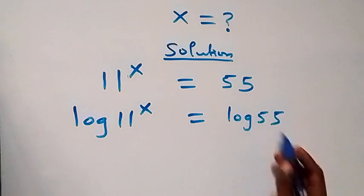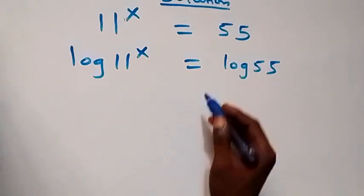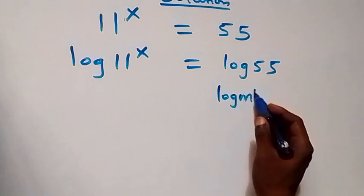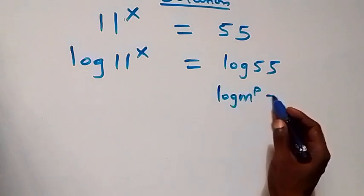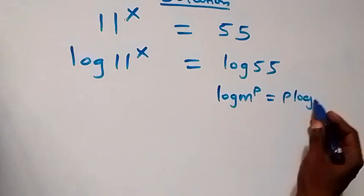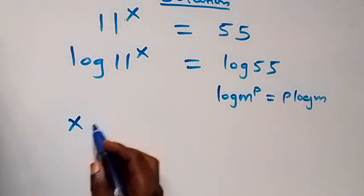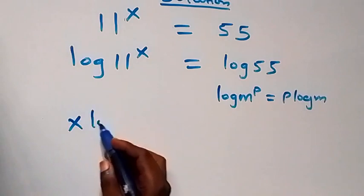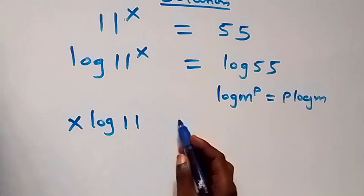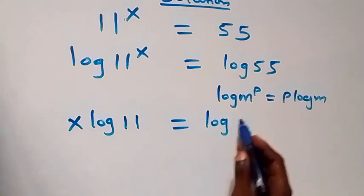Then applying the power rule of logarithms, reading from log m raised to power p, which is the same as p times log m. Here the power is x, so we have x log 11 equals to log 55.